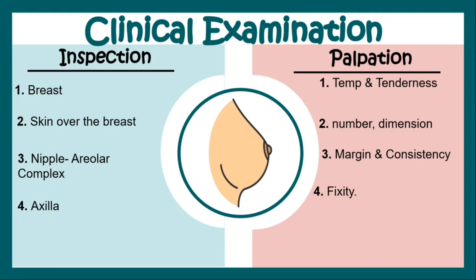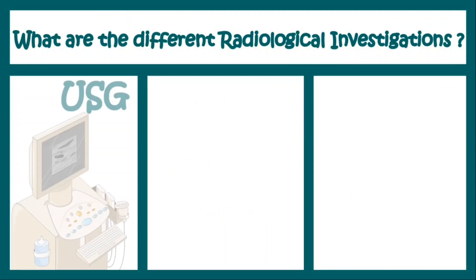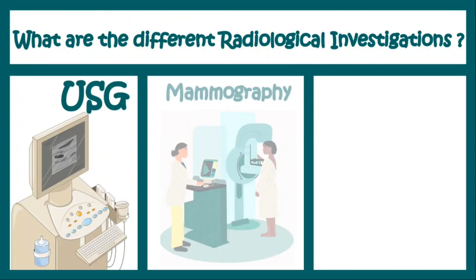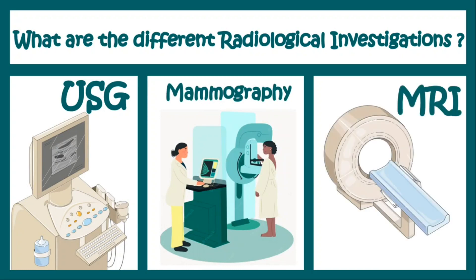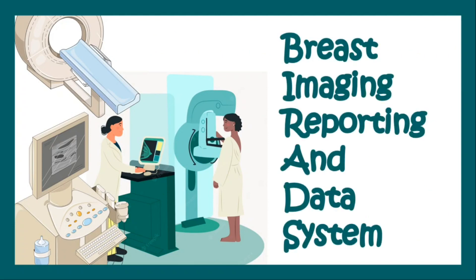Once clinical examination and patient history is complete, the doctor sends the patient for radiological investigations. These include an ultrasonography or USG, a mammography which is a type of X-ray, and MRI. If you don't know about USG and mammography, I would suggest you check out the videos on our channel where we have explained those concepts in detail. These radiological investigations are interpreted using a system known as BI-RADS — that is Breast Imaging, Reporting, and Data System.